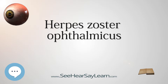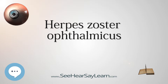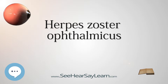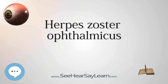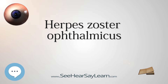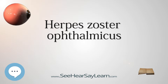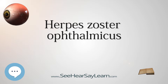Corneal epithelial involvement includes punctate epithelial erosions and pseudodendrites, which often have anterior stromal infiltrates. Onset occurs 2–3 days after the onset of the rash, resolving within 2–3 weeks. This is a common manifestation.